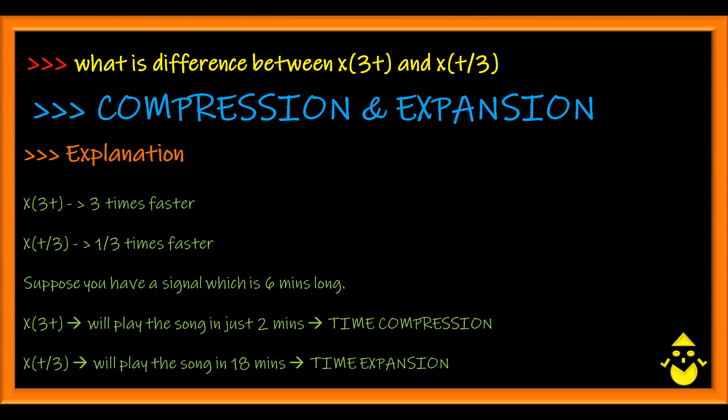So if you have a song which is two minutes duration, your X of 3t will play that song in just two minutes, whereas your t by 3 will play the same song in 18 minutes. So the two minutes conversion is your compression and your 18 minutes song playing is your expansion.